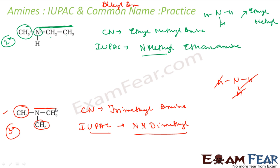And now this chain has only one carbon, so it is meth-, all single bond compound, -amine. So it is N,N-dimethylmethanamine. That is the IUPAC name for this compound.